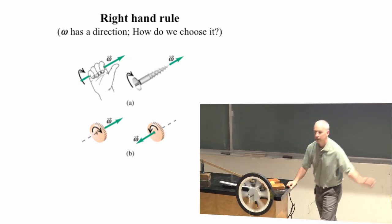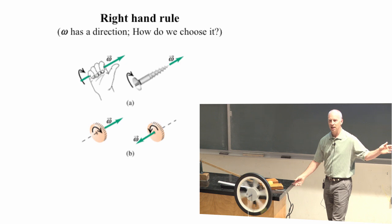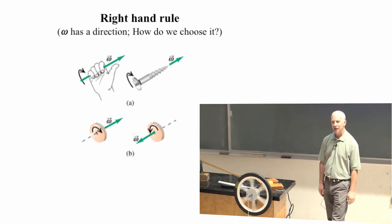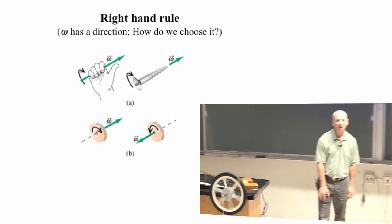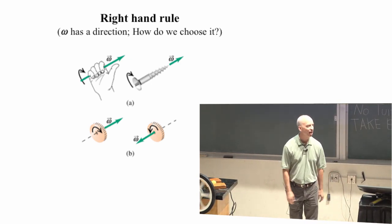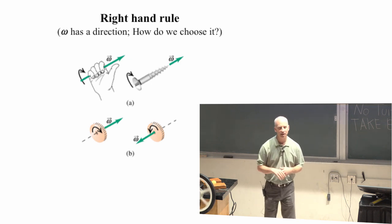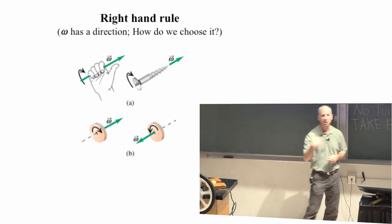What about the other direction? What's your right hand rule? What's your right hand tell you? Direction of the angular velocity? Well, this is clockwise. It's the opposite of counterclockwise. So it would be good if it were in the opposite direction. And I think your right hand rule will tell you that it points away from you.